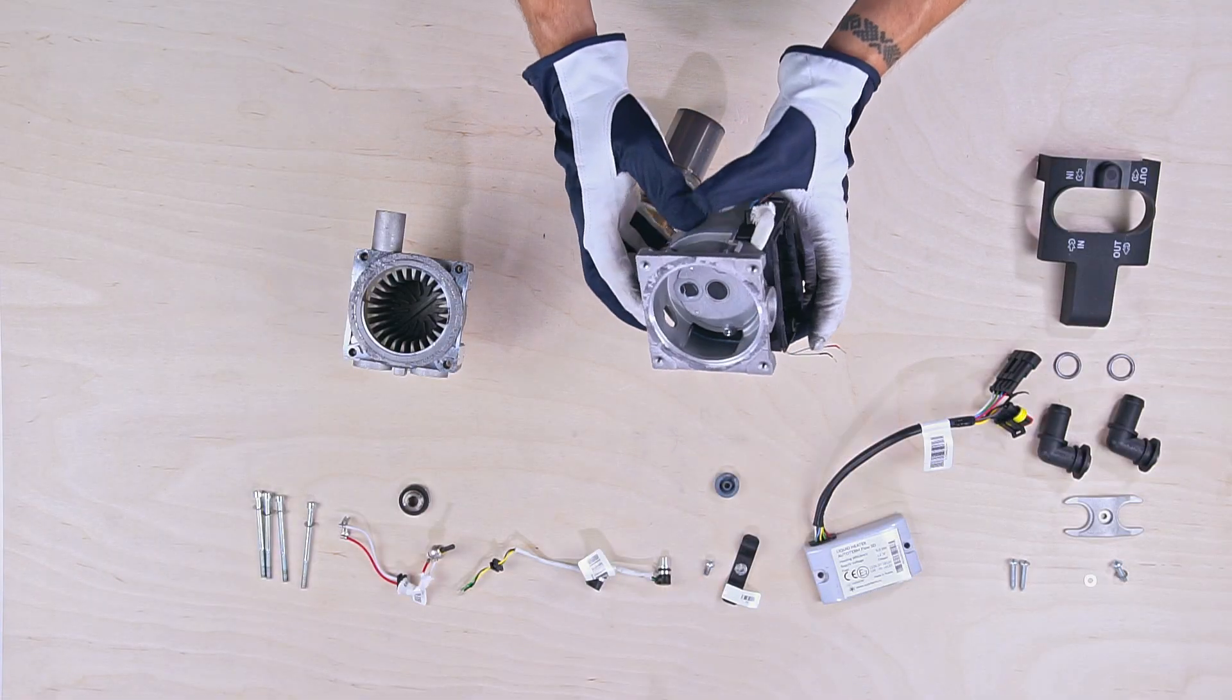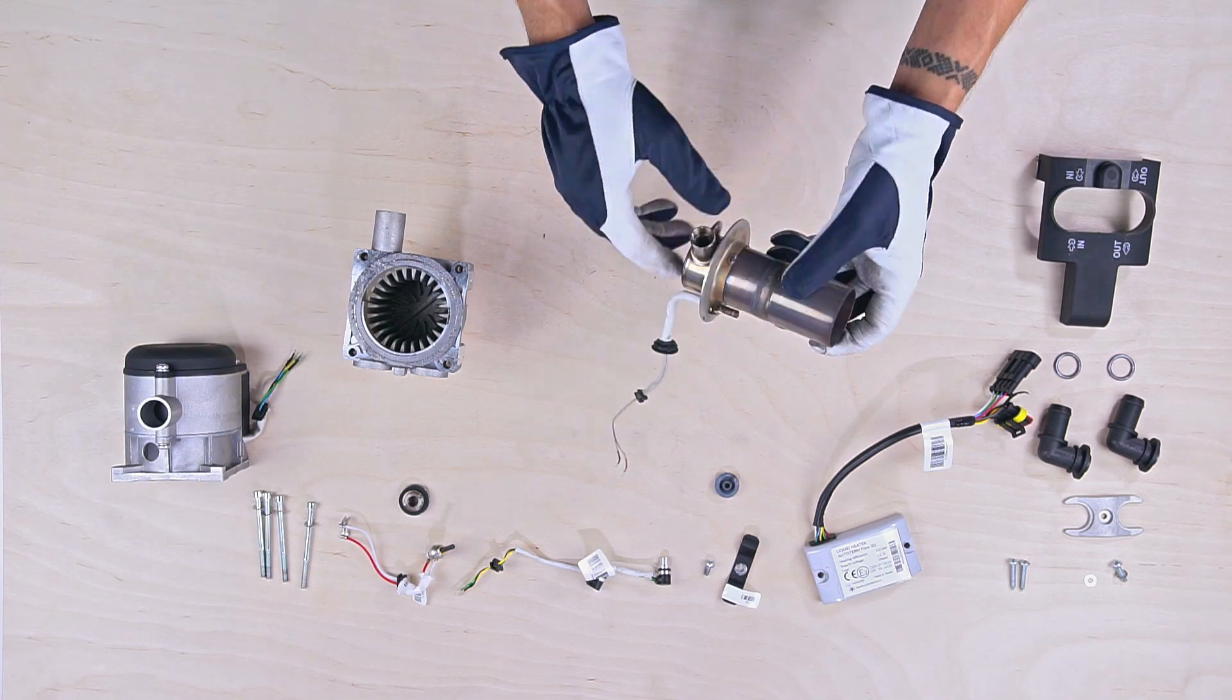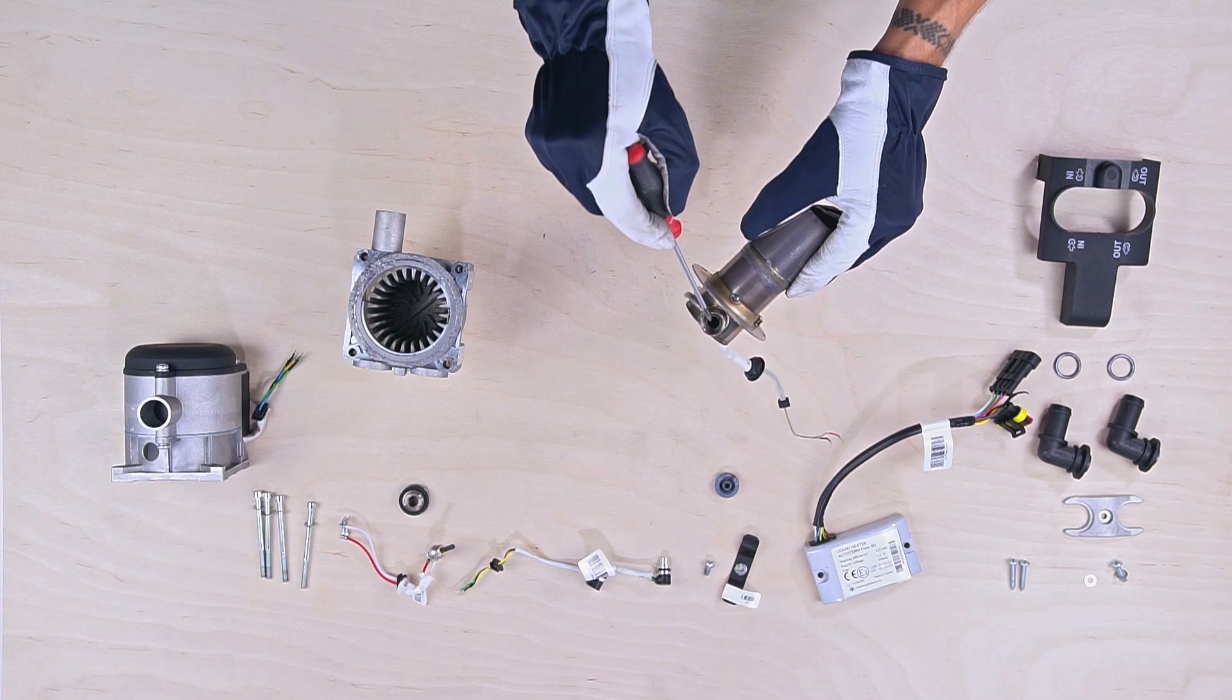This part is the brushless air pump. And this is the combustion chamber, where you can see the glow plug evaporating screen inside.